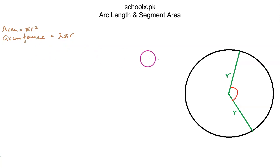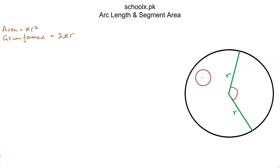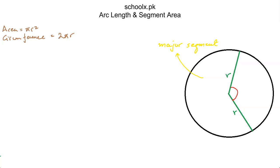Now, if we divide a circle into two segments from the center, the larger one is called the major segment and the smaller one is called the minor segment.